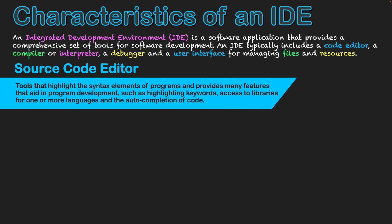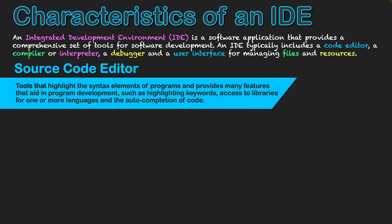The source code editor highlights the syntax elements of a program and provides many features that aid in development, such as highlighting keywords of the programming language being used and access to libraries for one or more languages stored within the IDE — for example, Python, Visual Basic, and JavaScript. As a result of having those libraries, it also provides an autocomplete function, helping insert specific keywords or code structure as you type, improving the efficiency of the programmer.